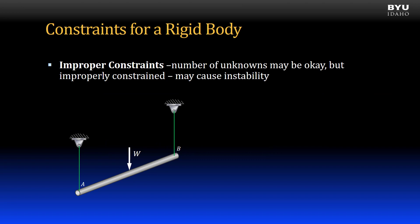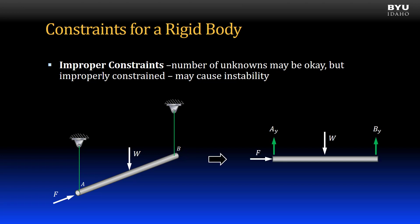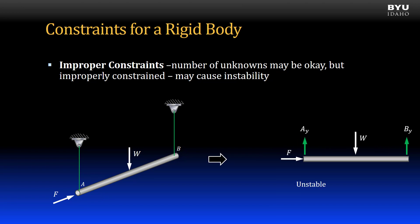In this first example, a rod subjected to its own weight is supported by two cables, one at A and one at B. In this loading condition the bar is stable, but if a force F were applied, the body would become unstable. So this rod is improperly constrained. Bodies with reactive forces that are all parallel are improperly constrained.